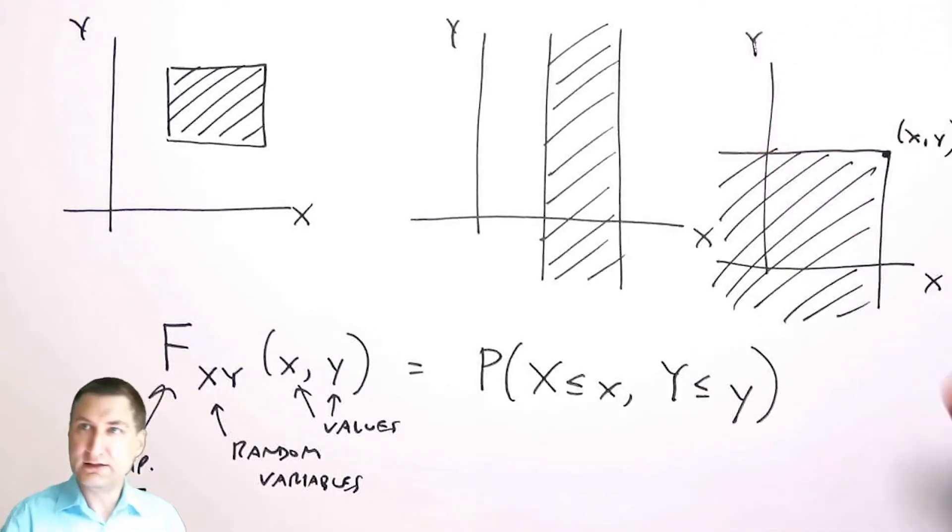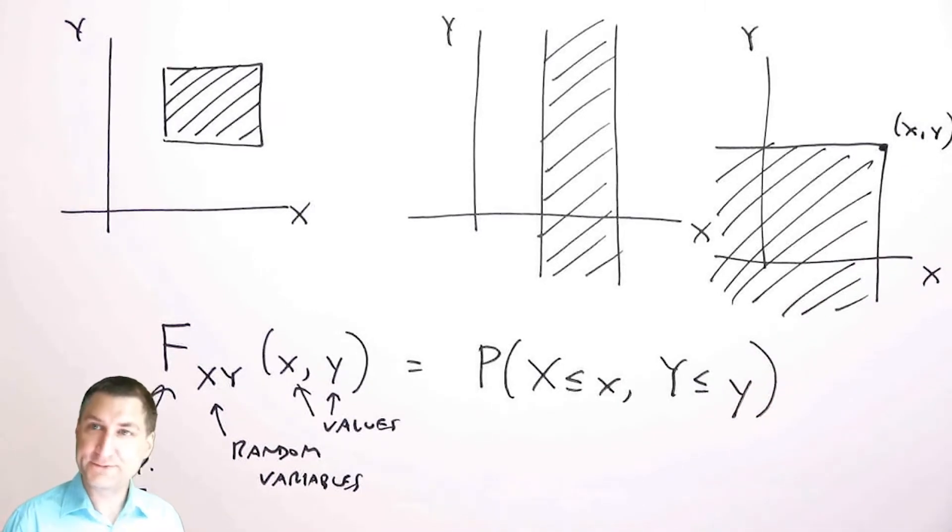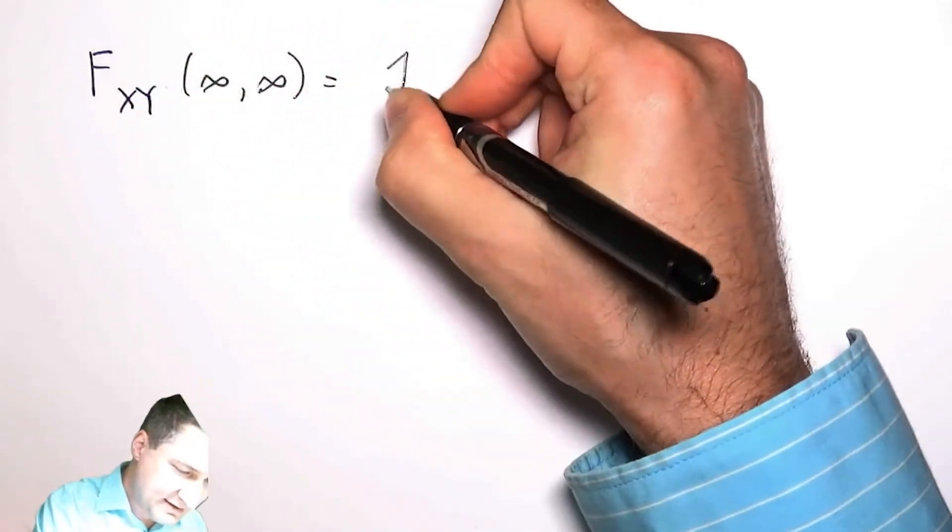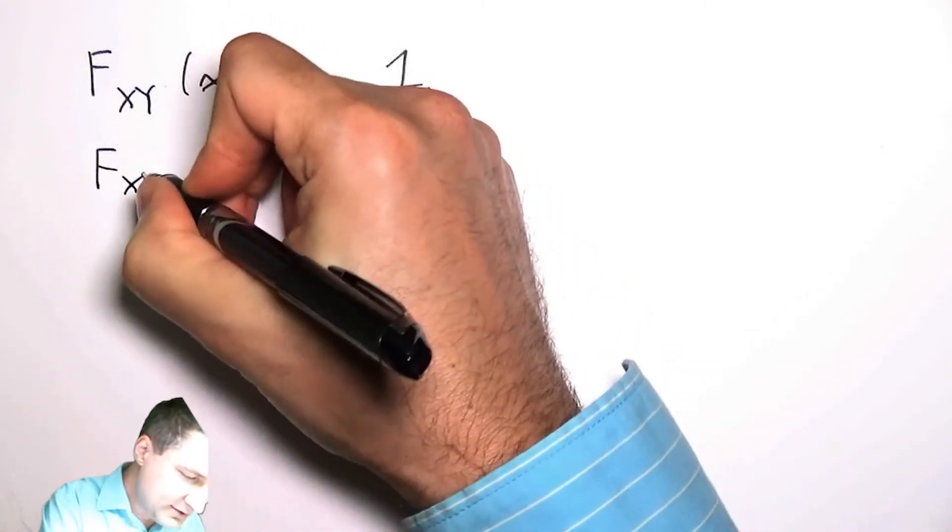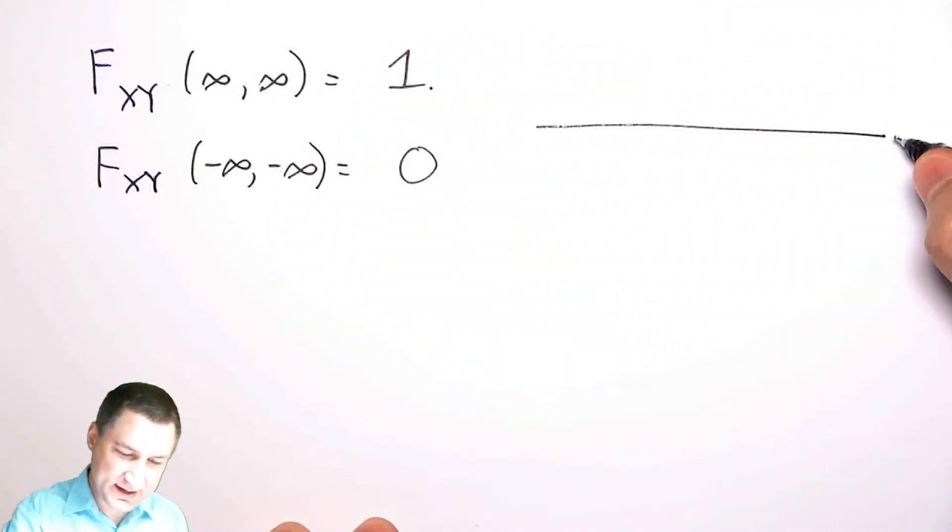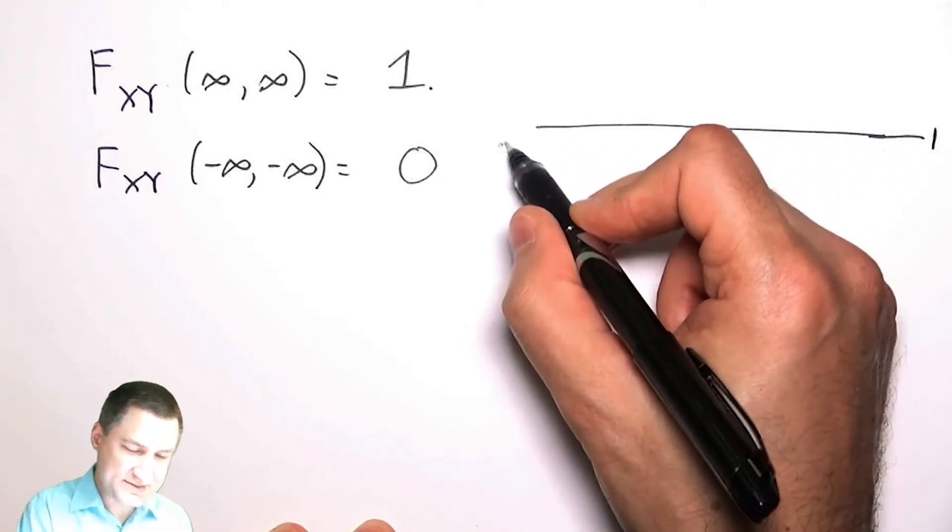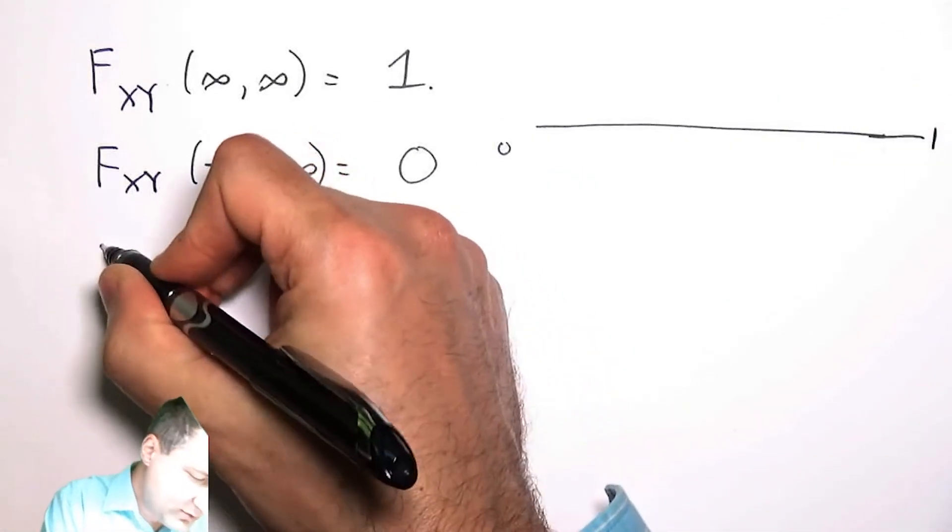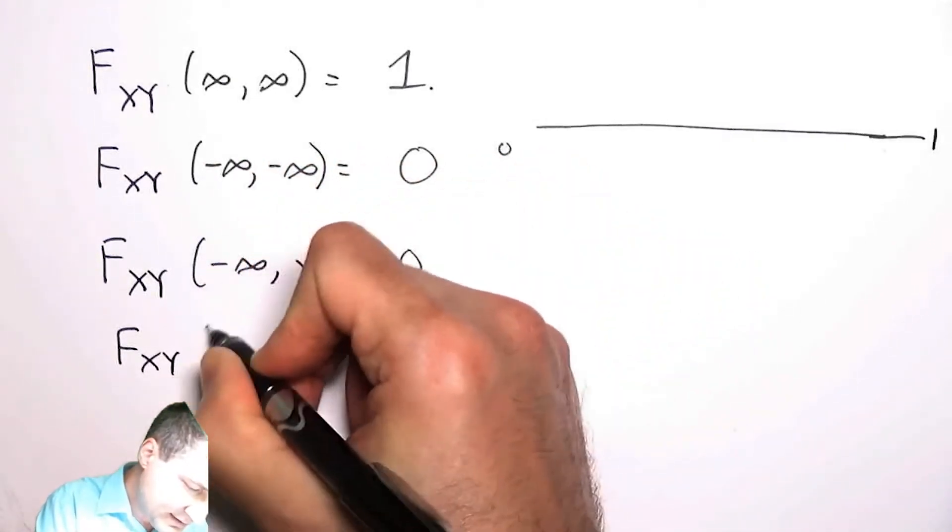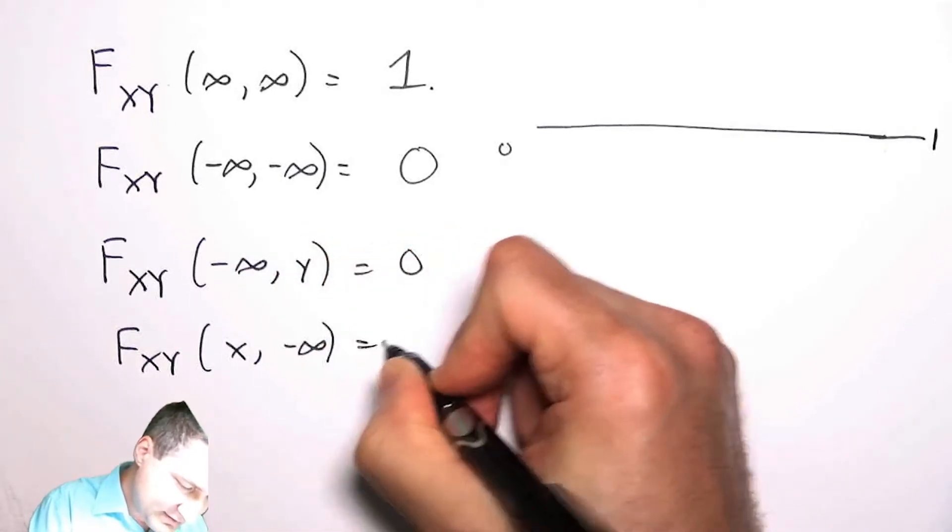We know some things immediately about the CDF that we inherit from the idea of one dimension. For example, I know that all the way out at infinity, I have to have one, and all the way out at minus infinity, I have to have zero. This is kind of the analogy of saying on the real line, the CDF has to be one by the time I get to infinity, and it's zero if I look all the way at minus infinity. And the same way, if I look at a partial piece of the CDF, this is also true.